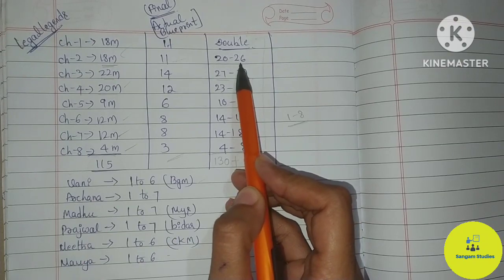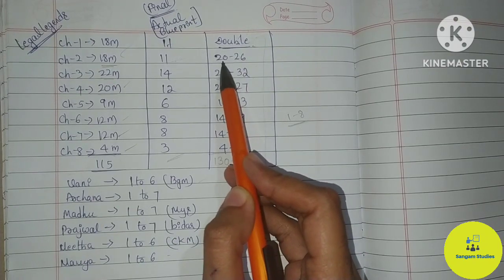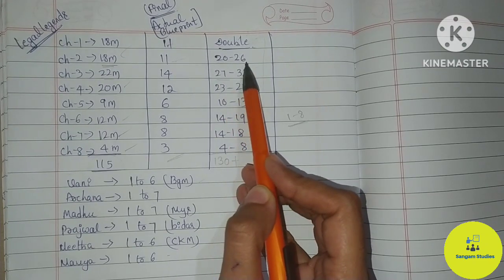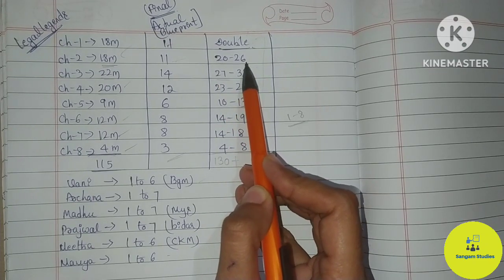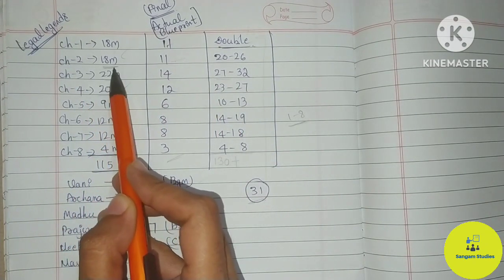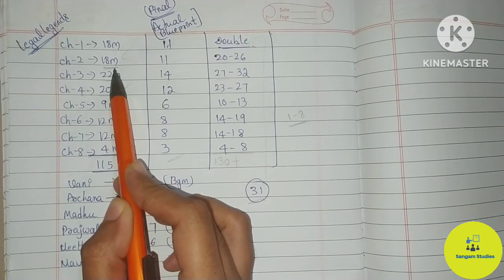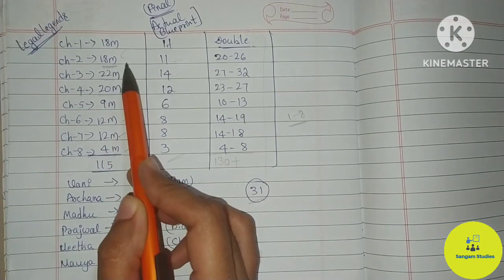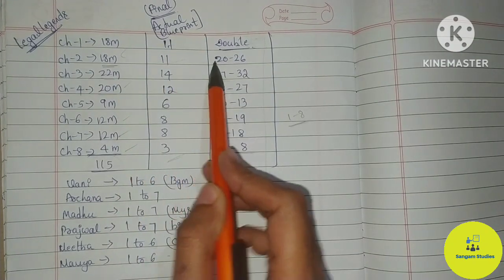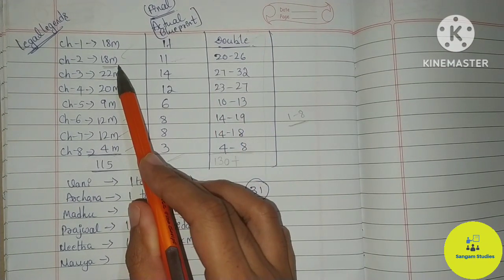In between 22 and 26 marks, there are some chances in the middle of the examination. But the legal legends are distinctly 18 marks in each chapter. Here the two marks vary, but it is 18 marks.